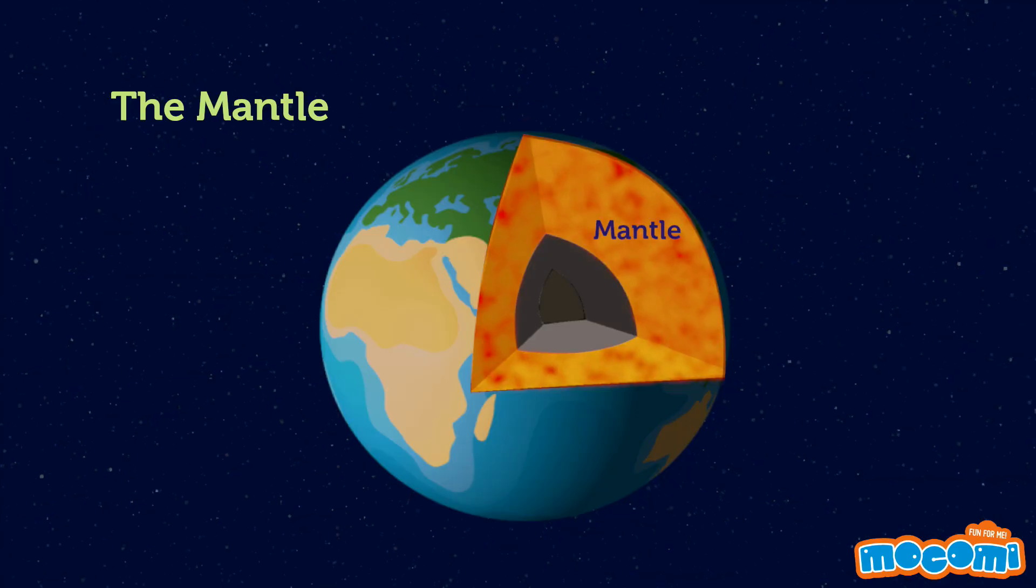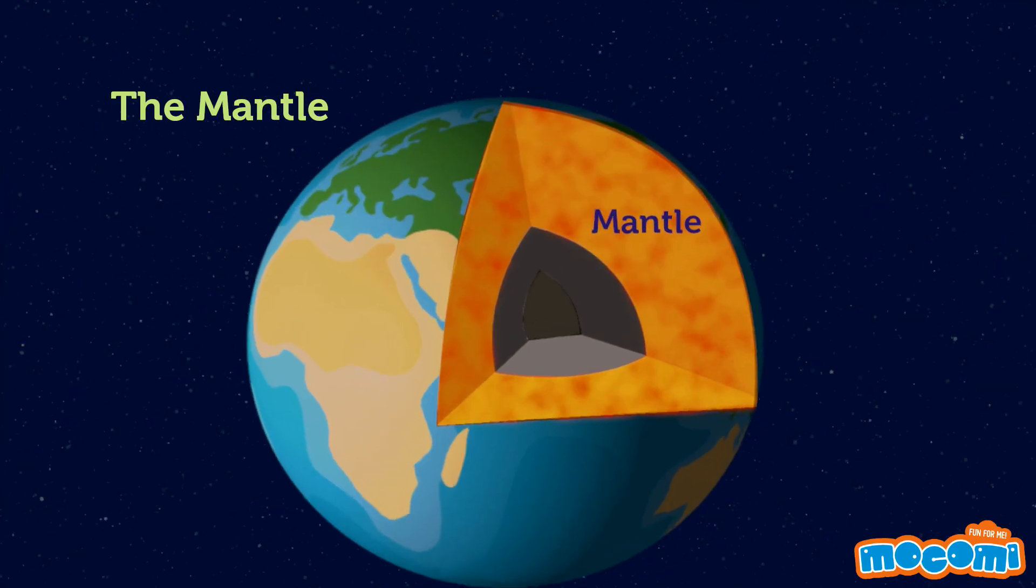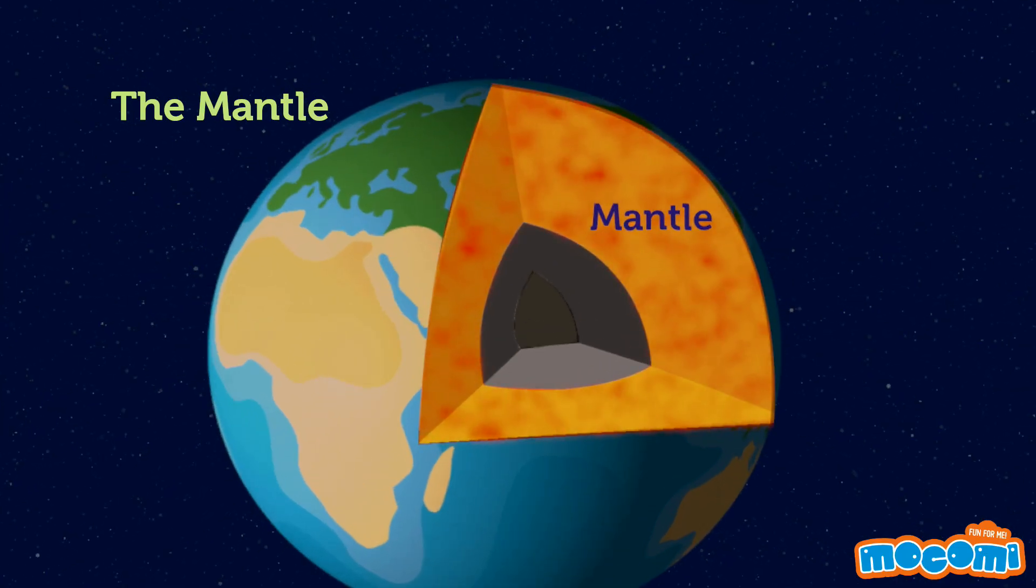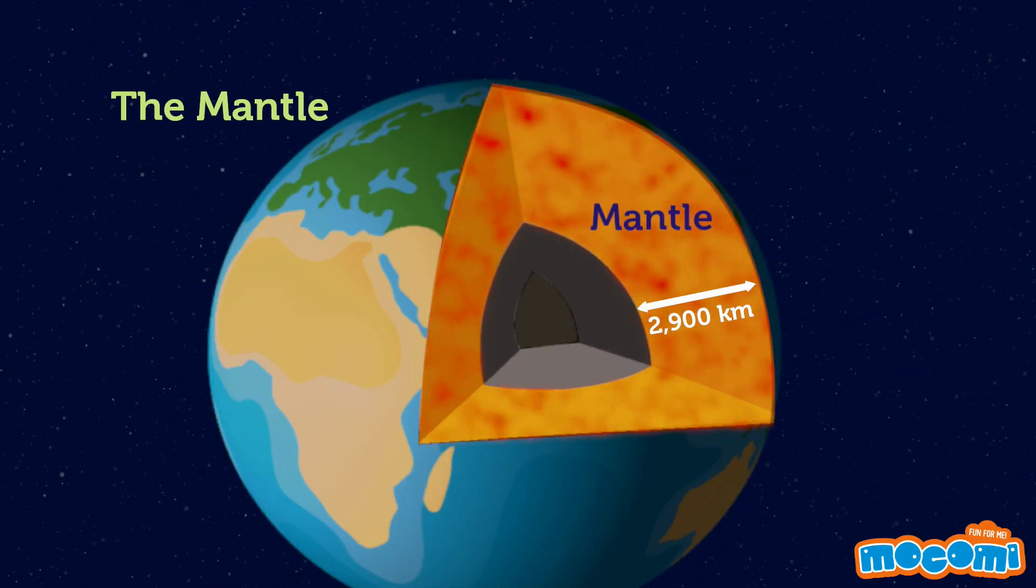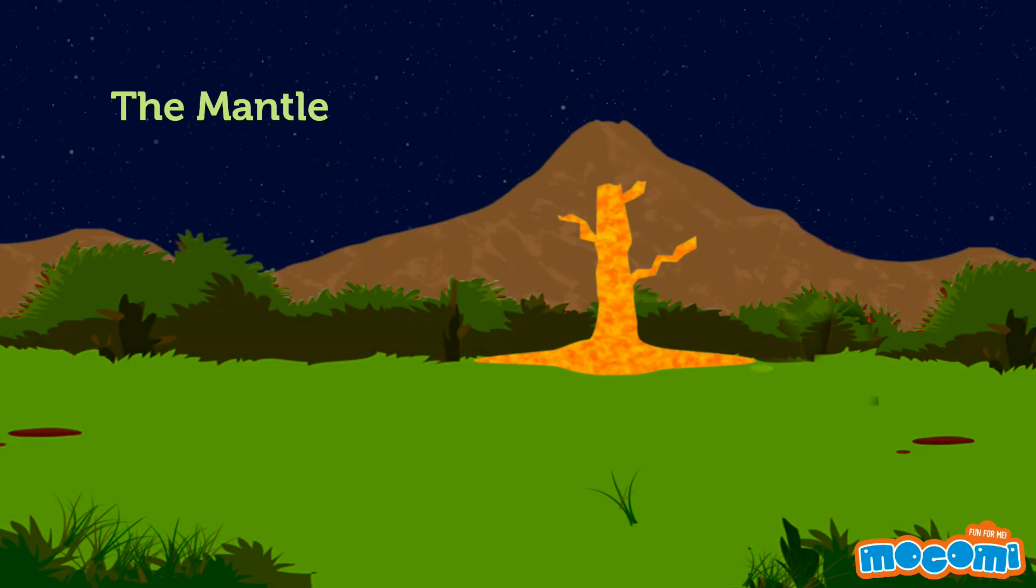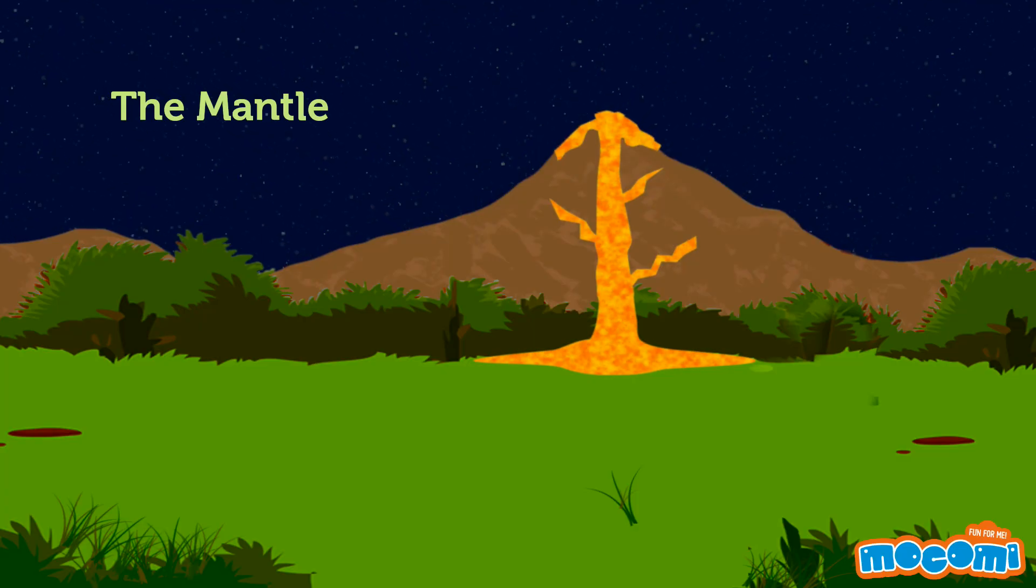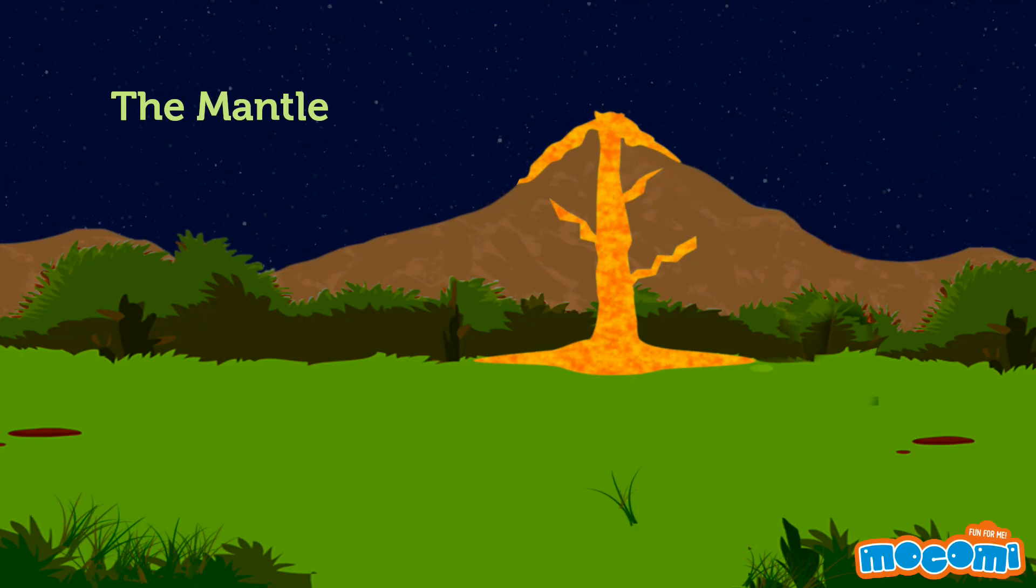Part of the Earth's mantle is made up of rocks so hot that it is liquid or molten. The mantle is measured at 2,900 km of thickness. This molten rock seeps through cracks in the crust and pours out of volcanoes in the form of lava.